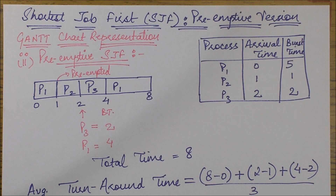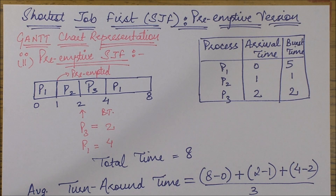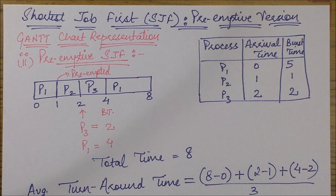That is the criteria over which we decide to stop a particular process or not. This is what we mean by preemptive shortest job first. It is also referred to as Shortest Remaining Time First in many questions and textbooks, so please note that Shortest Remaining Time First is a synonym for preemptive SJF.